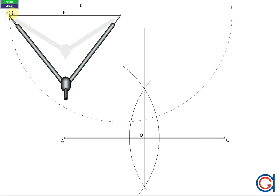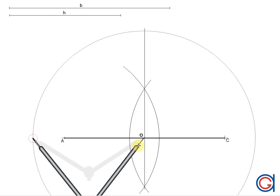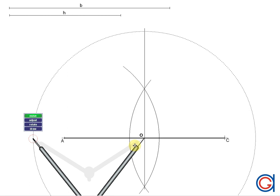So the next step is setting our compass to the length of the given height H and setting our compass on the new point O. I will scribe an arc above until it cuts our previously drawn perpendicular bisector.